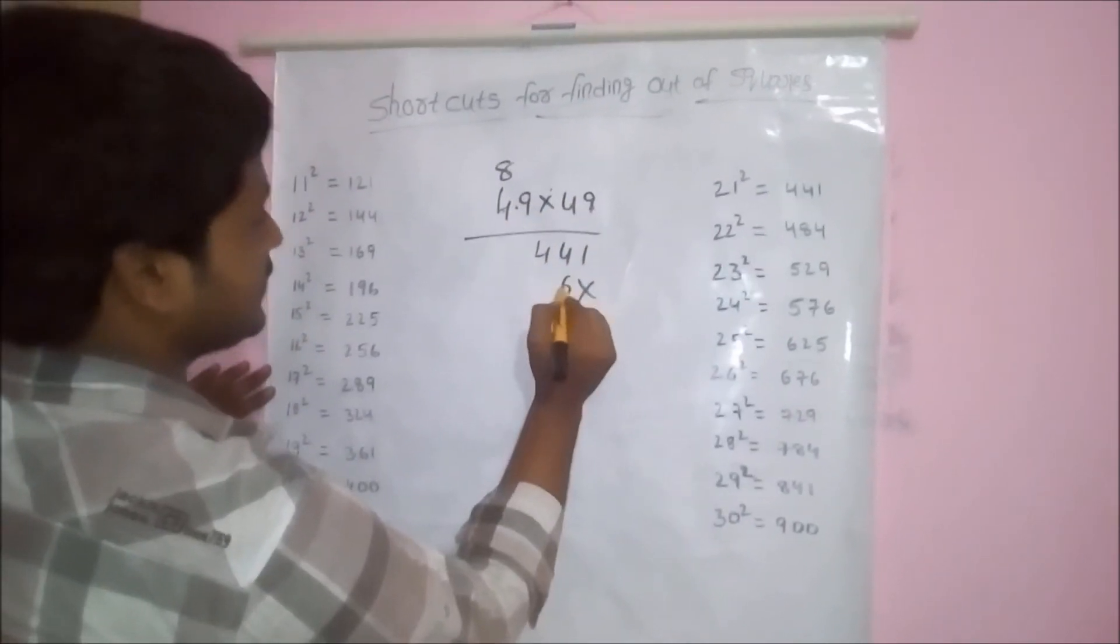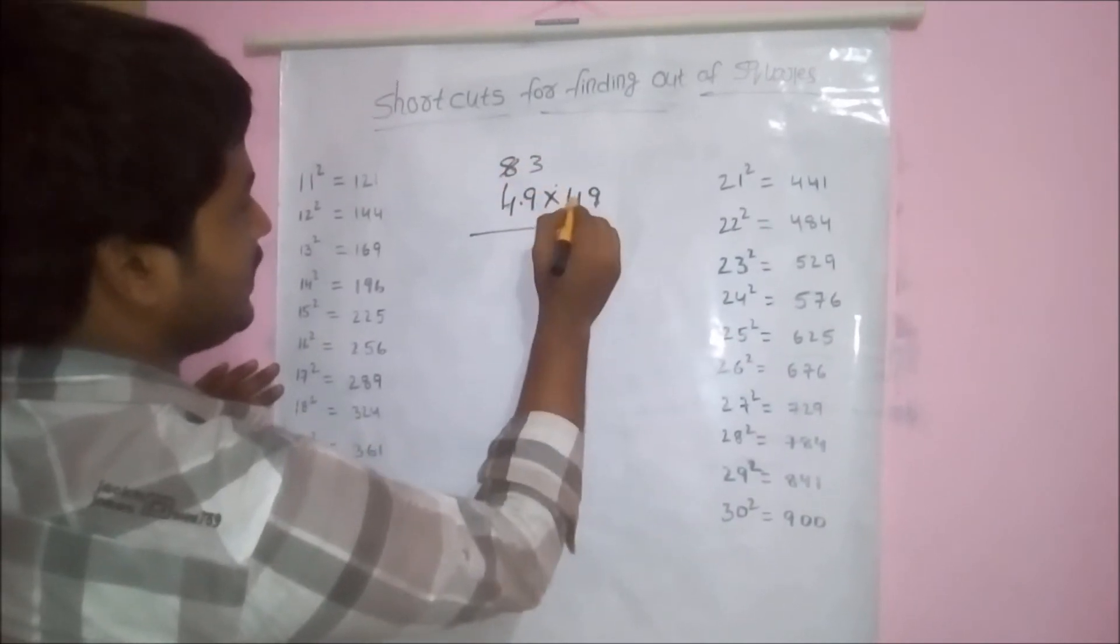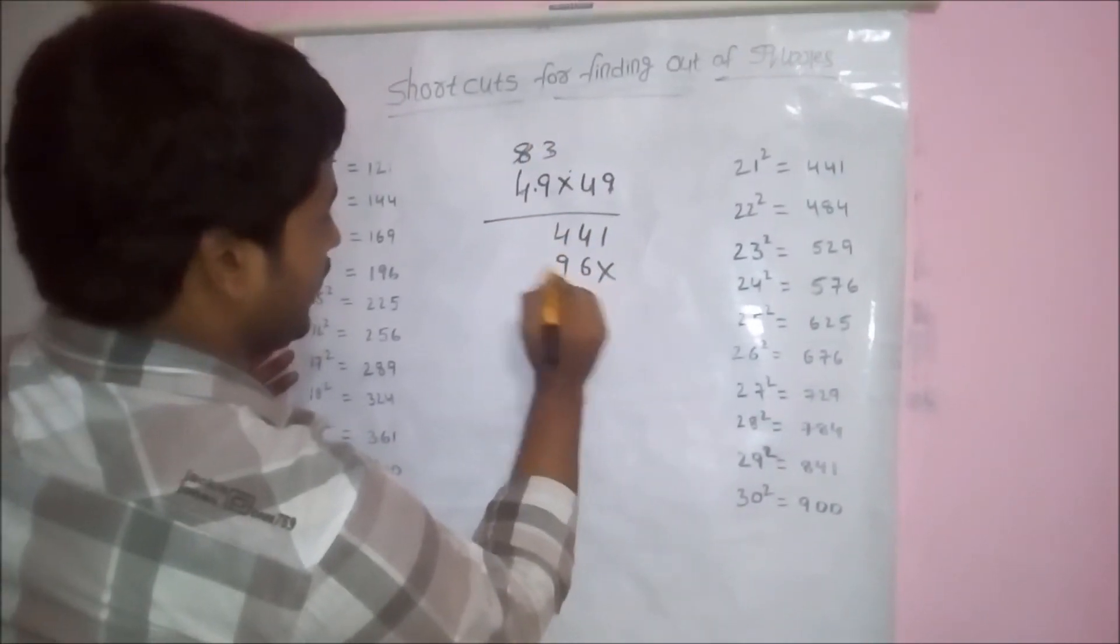Next, 4 nines are 36, 3 is carry. 4 fours are 16, 16 plus 3, 19.